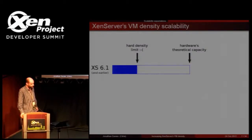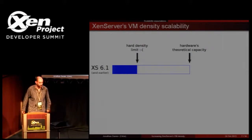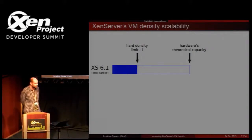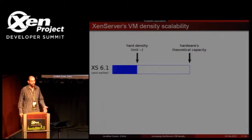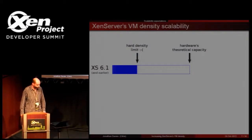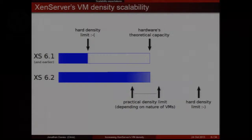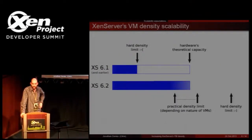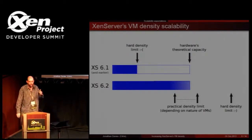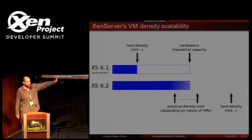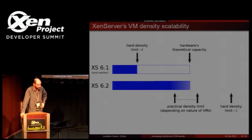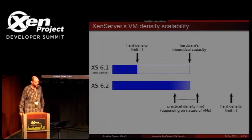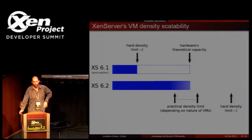The rather unfortunate situation XenServer found itself in is that we really couldn't do that — we weren't scaling with hardware. People were buying bigger boxes and asking why we couldn't run twice the number of VMs. With previous versions of XenServer, we had hard limits to our VM density that meant we were not able to exhaust the theoretical hardware capacity for modern enterprise-grade server hardware. In XenServer 6.2, we've solved that problem by moving hard density limits way beyond what people will actually experience on reasonable hardware, and ensuring there are no soft limits either.